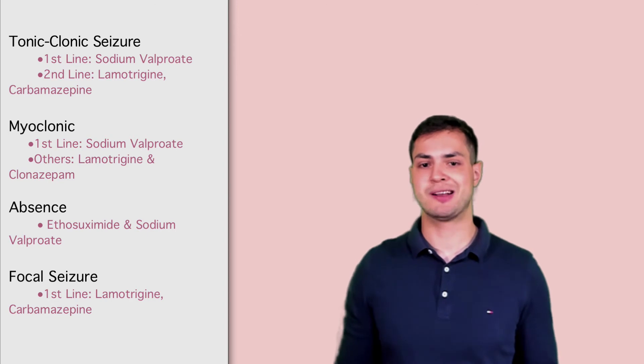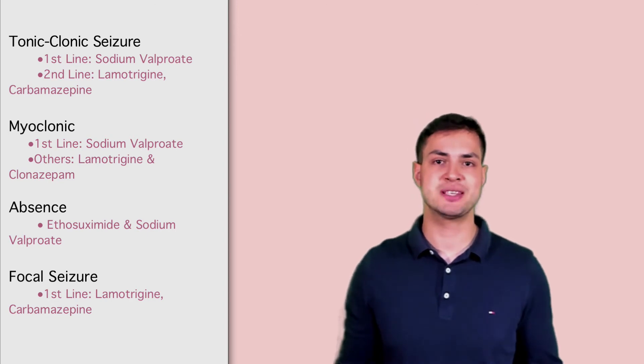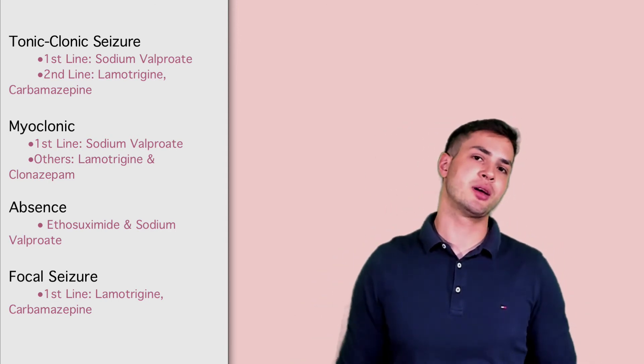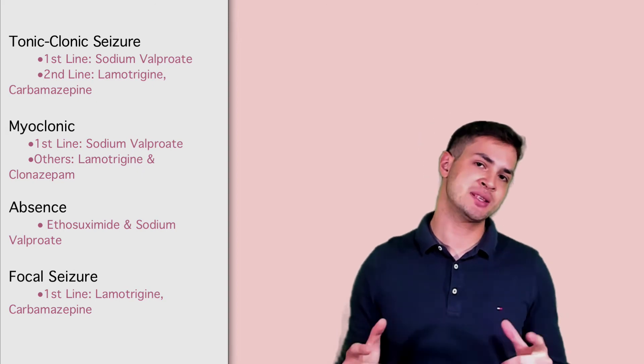And the fourth type of seizure is a focal seizure. So this is a partial seizure. It could be complex if there is impaired consciousness or it could be simple if the consciousness is fully there. These seizures are usually treated with lamotrigine or carbamazepine. So this is all I'll talk about.